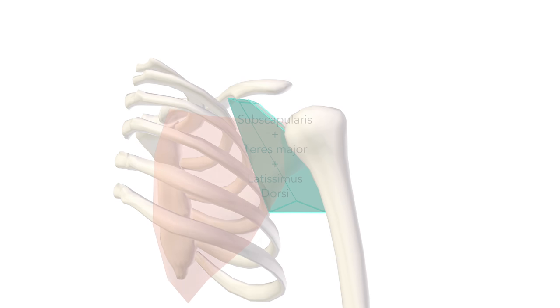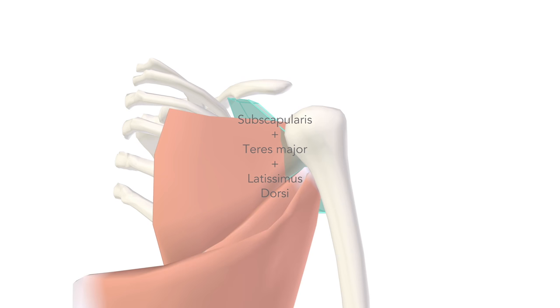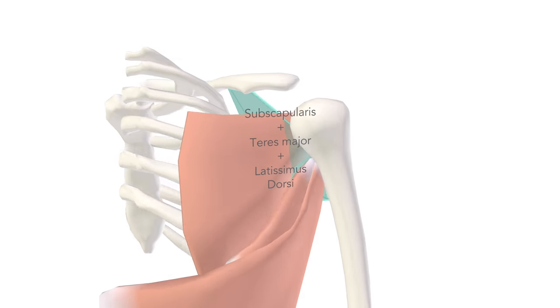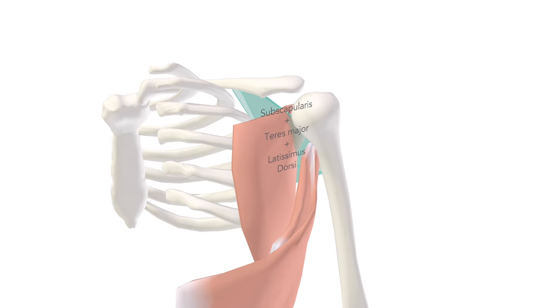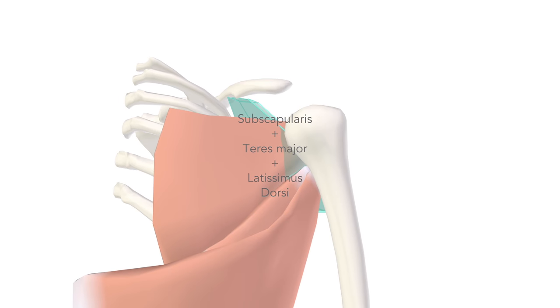These are subscapularis, teres major and lat dorsi. Moving back now, that is subscap, teres major and lat dorsi. The scapula then completes the picture.